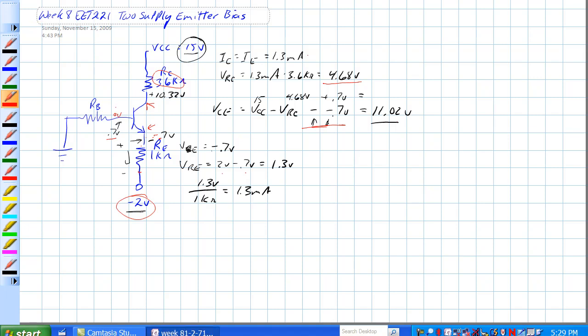They are assuming, of course, that this is approximately, let's see, VB is approximately zero volts, then we covered everything else.